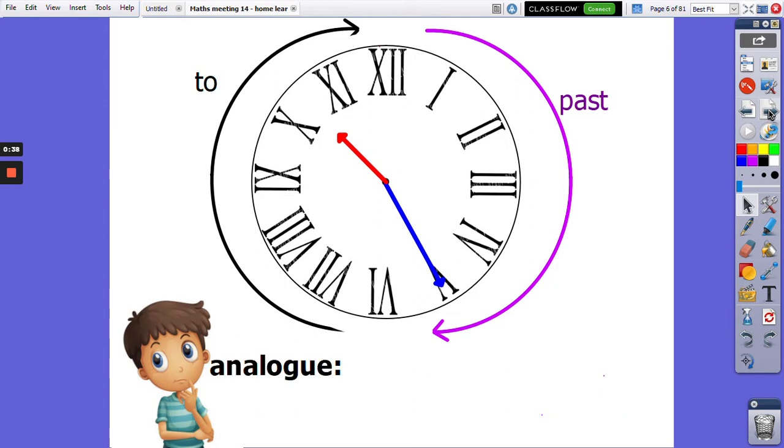Okay, we're going to tackle analog first of all. Our minute hand is here on the right side of the clock, which means we're going past. What hour are we going past? We're going past X, which is 10. So how many minutes past? 5, 10, 15, 20, 25. 25 minutes past 10, or 25 past 10.